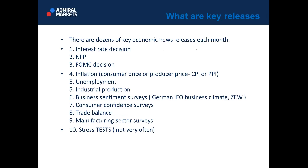There are dozens of key economic news releases each month. We have interest rate decisions, NFP, FOMC decision, inflation — which is usually marked as CPI or PPI — unemployment, industrial production, business sentiment surveys, trade balance, manufacturing sector surveys, and not very often, stress tests. Stress tests don't happen often, so you can neglect them. But if that happens, we read the calendar and during stress tests we do not trade.